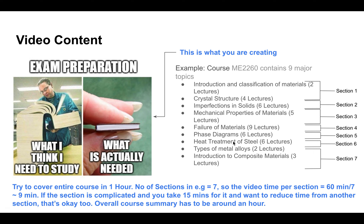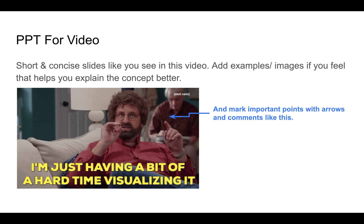I understand that in some cases certain sections might be very complicated. For example, the failure of materials section covers nine lectures, so if you want to take a little bit more time for that and reduce time from some other section, that is okay too. You can do a slight up and down in the number of minutes, but try to make sure the overall summary is around one hour.